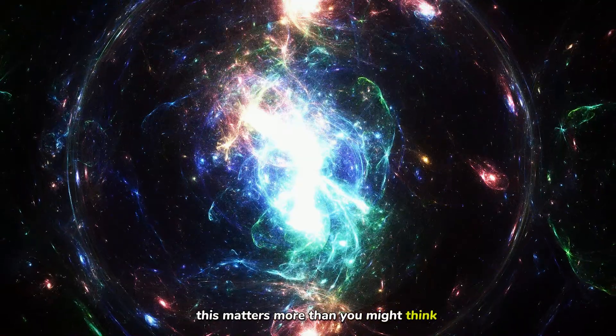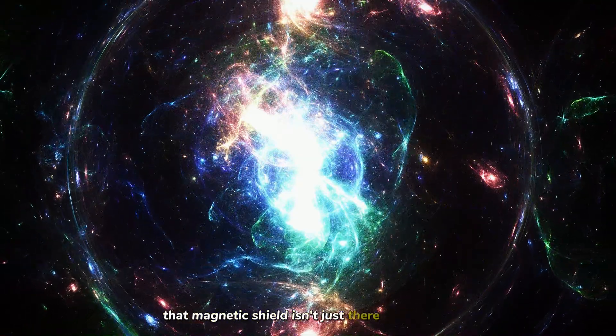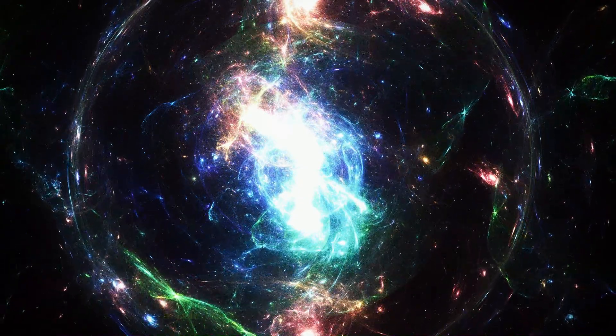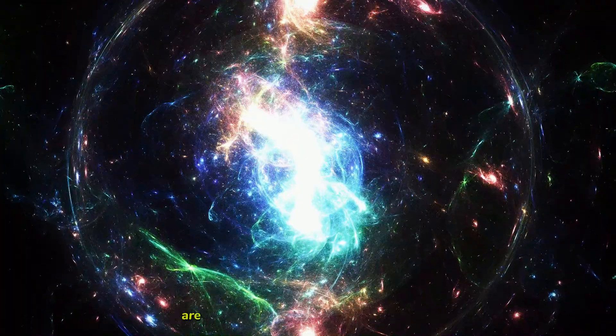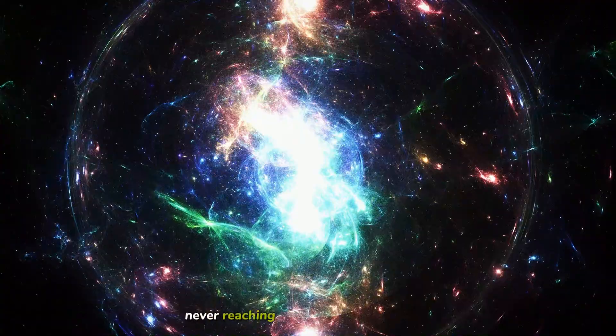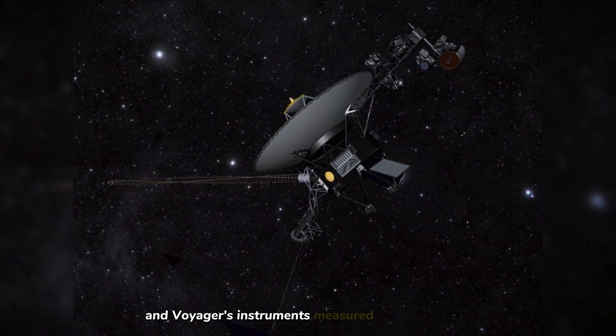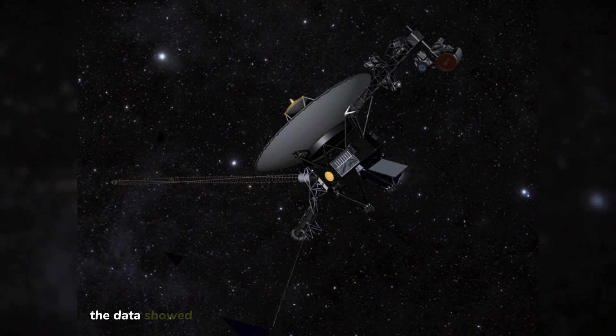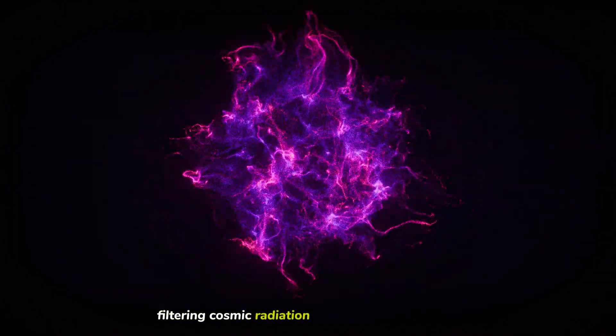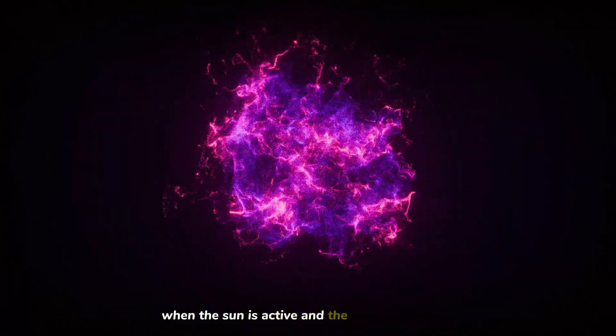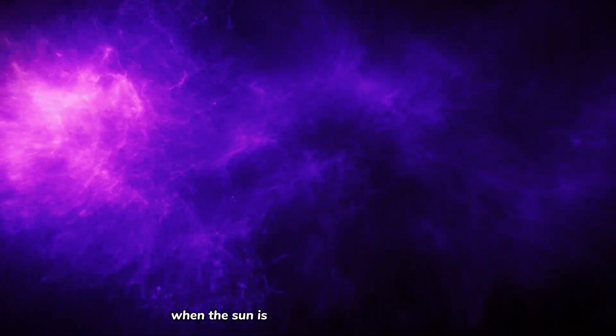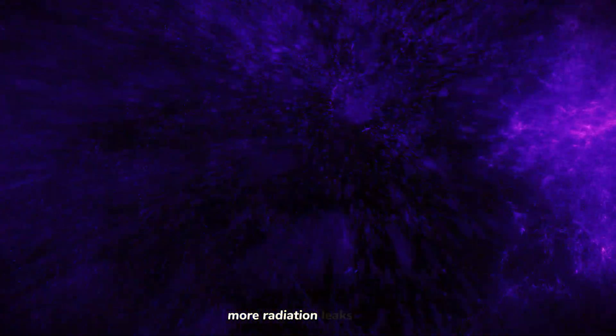This matters more than you might think. That magnetic shield isn't just there for decoration. It protects us. Cosmic rays, high-energy particles accelerated by distant supernovae and black holes, are constantly bombarding our solar system. Most of them are deflected by the heliosphere, never reaching Earth. But some get through, and Voyager's instruments measured exactly how many. The data showed that the heliopause acts like a semi-permeable membrane, filtering cosmic radiation based on the sun's activity. When the sun is active and the heliopause expands, more cosmic rays are blocked. When the sun is quiet and the boundary shrinks, more radiation leaks through.